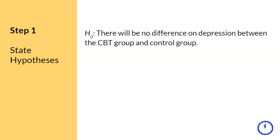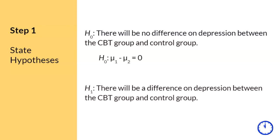Step one. Since we're studying whether there is a difference between the two groups on depression, the hypotheses include these variables. In notation, if there is no difference between both groups, then mu subscript one minus mu subscript two equals zero. Subscripts one and two differentiate between the two groups. The research hypothesis reflects a difference: mu subscript one minus mu subscript two does not equal zero.